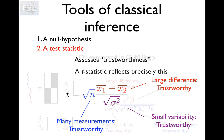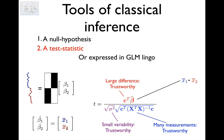The t-statistic expressed in general linear model lingo — you've seen all these things before in previous talks. We have the contrast vector, our parameter estimates (in this case representing the group means of two different groups), and our design matrix, which implements a model that looks for the difference between two different group means.